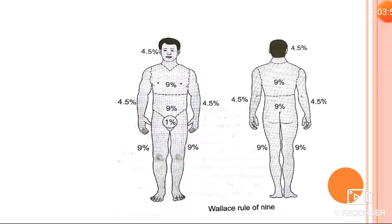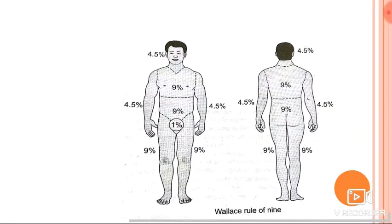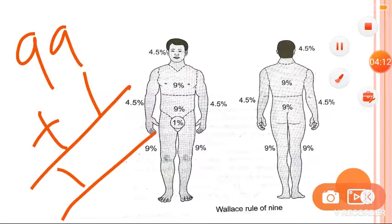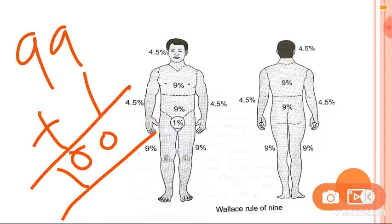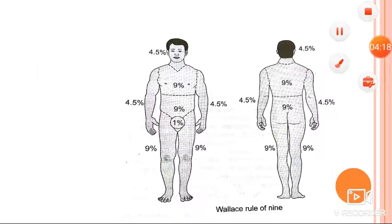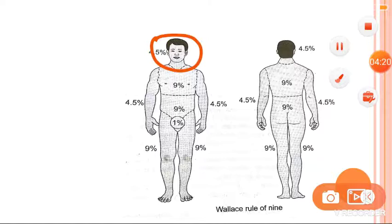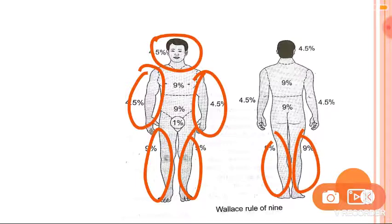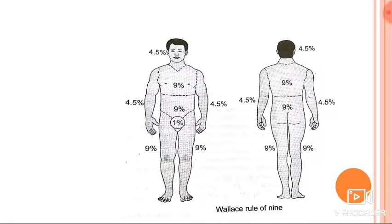Nine times eleven — eleven nines are ninety-nine. So we have eleven nines equaling ninety-nine, plus one percent for the genitalia, which becomes one hundred percent. If you count them: one, two, three, four, five, six, seven, eight, nine, ten, eleven — we found the eleven nines. That is Wallace's Rule of Nine.